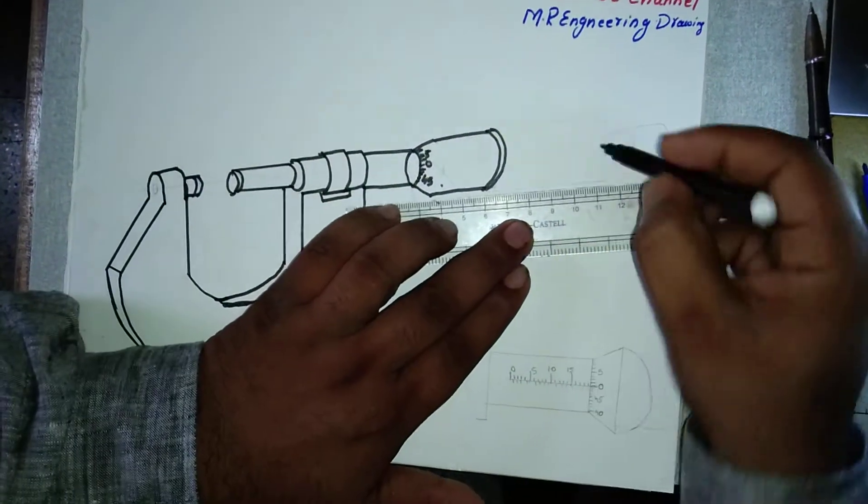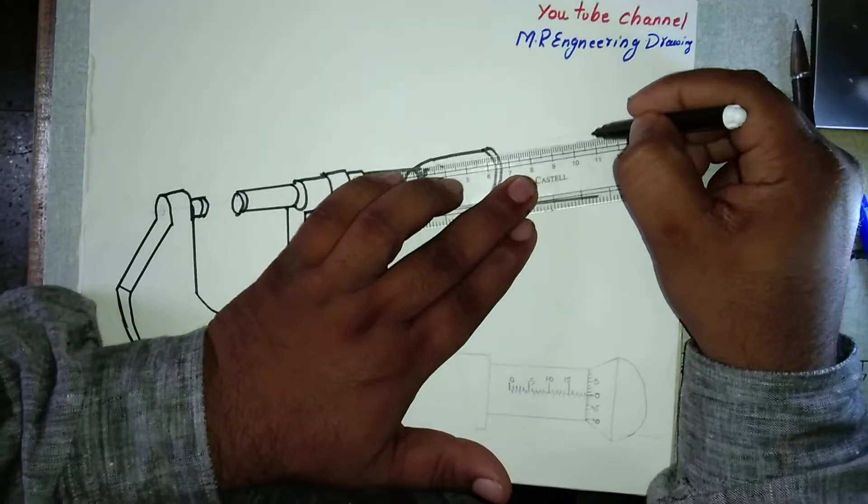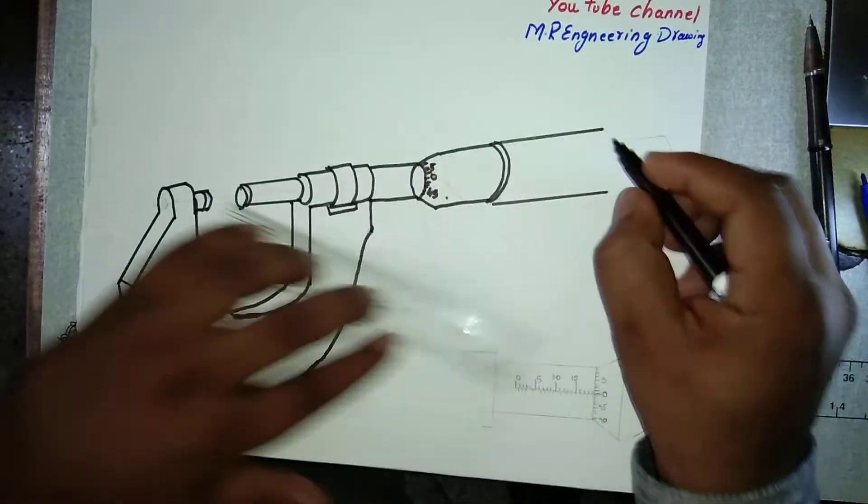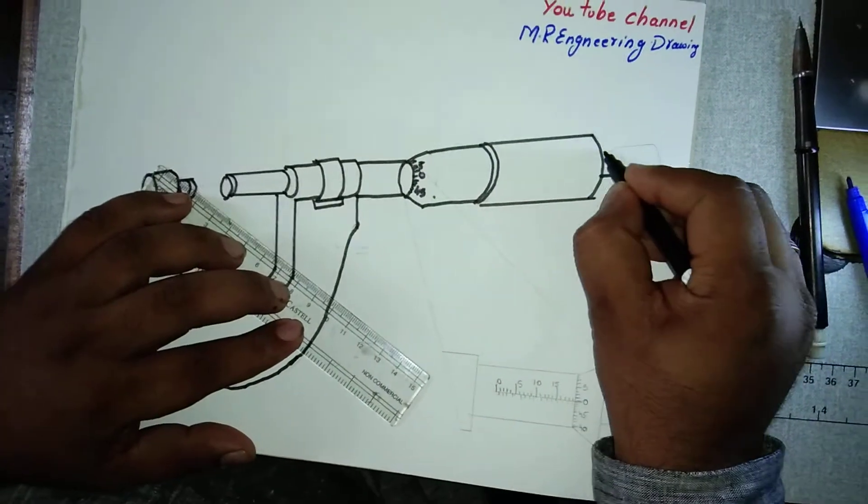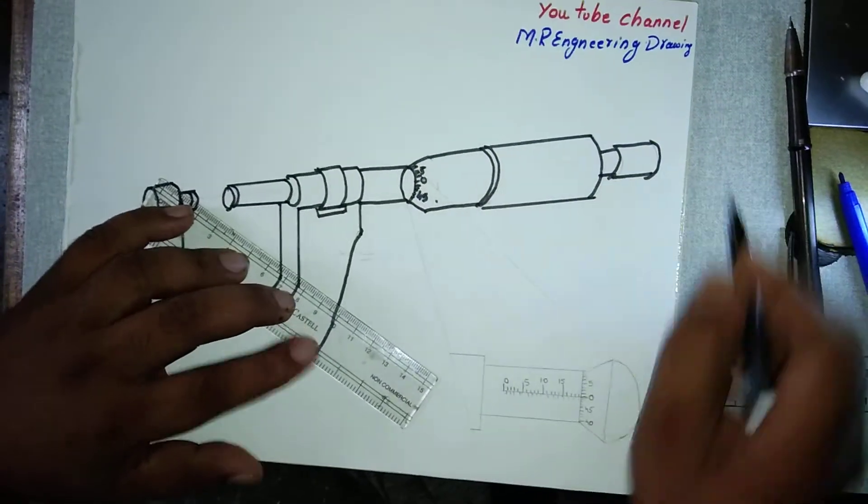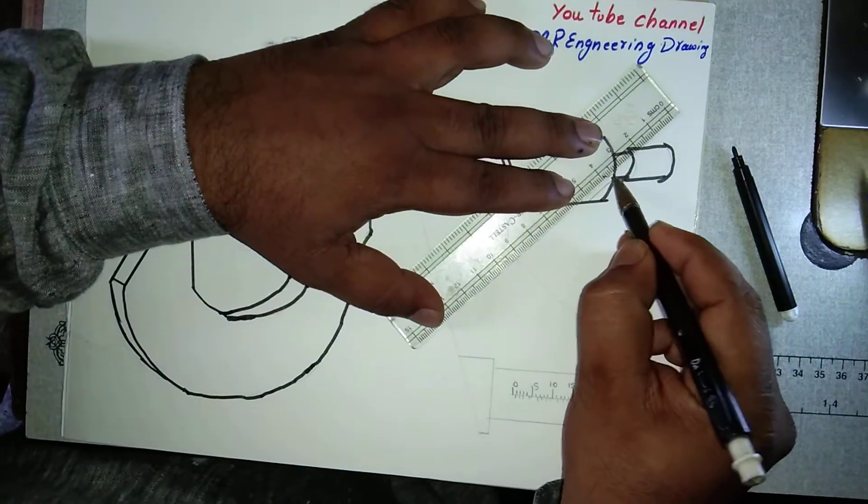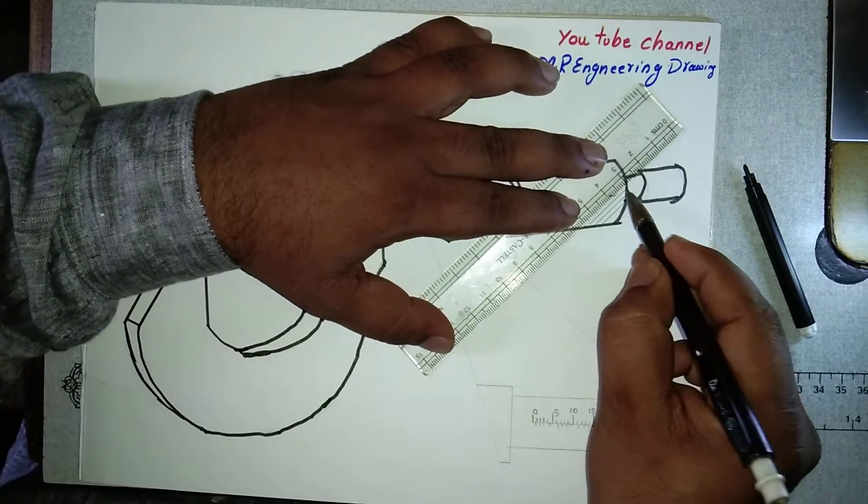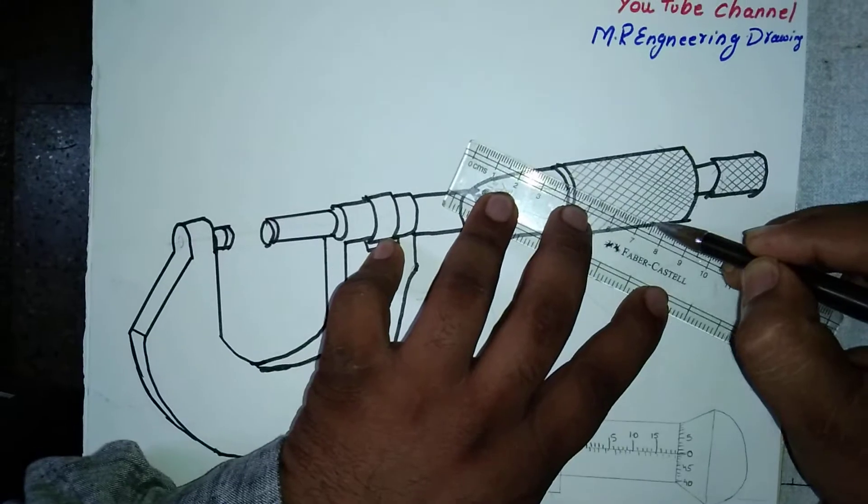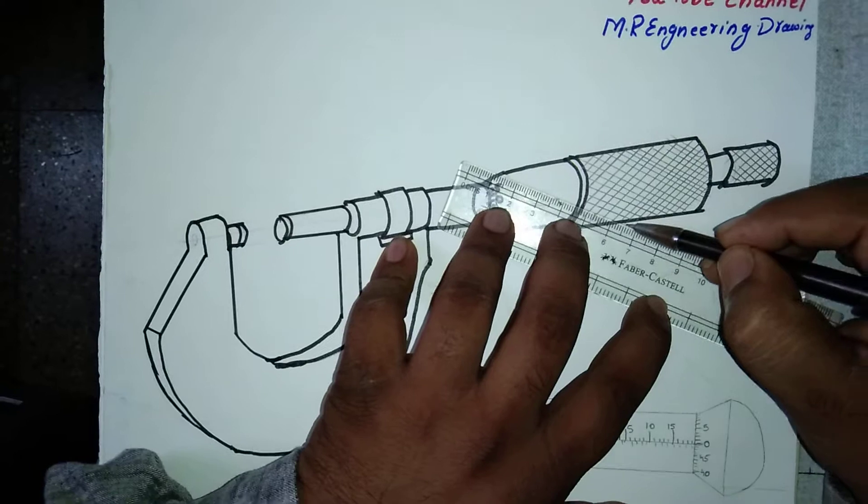Then this is for hand holding purpose, for grip purpose. What I am drawing is a ratchet stop. What I am drawing is a thread, it is used for holding purpose.